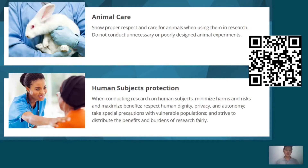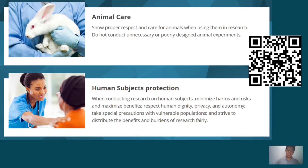Animal care — show proper respect and care for animals when using them in research; do not conduct unnecessary or poorly designed animal experiments. Human subject protections — when conducting research on human subjects, minimize harm and risk and maximize benefits. Respect human dignity, privacy, and autonomy. Take special precautions with vulnerable populations and strive to fairly distribute the benefits and burdens of research.